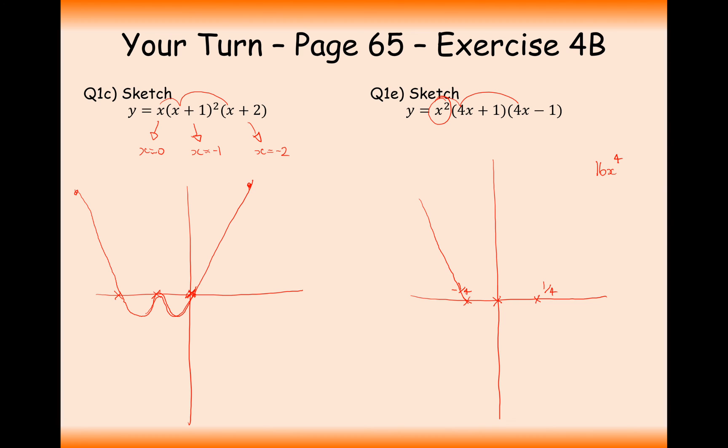So it's going to come down, intersect through here, repeated route at 0, and back up again like that.